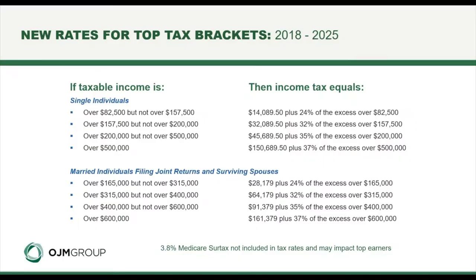Now the new tax rates for 2018 — these are scheduled to last until 2025. The two top tax rates: if your income is over $200,000 but less than $500,000 as a single filer, your tax rate is 35%. Those with taxable income over $500,000 would be subject to a 37% tax rate. If you're married filing a joint return, income between $400,000 and $600,000 falls in the 35% tax bracket, and if you're over $600,000, you are in the 37% marginal tax rate.